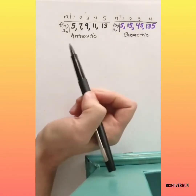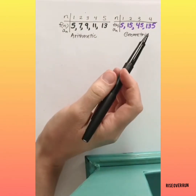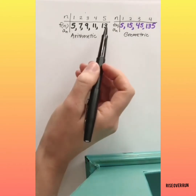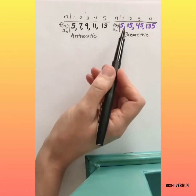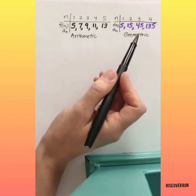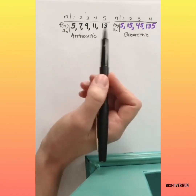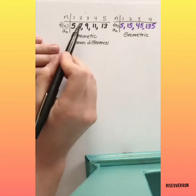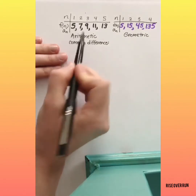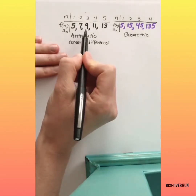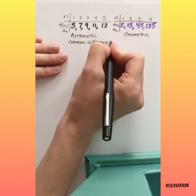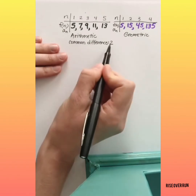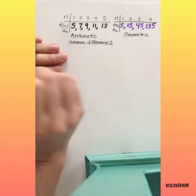It's important to know the difference between arithmetic and geometric sequences because that will help you write a formula. A lot of times in algebra, you'll be asked to find the 10th term or the 100th term. You could sit and write them out, but it's a lot quicker if you can make and use a formula. When you have an arithmetic sequence, the common difference is the number you're adding to get the next term. So this common difference is two. If it's increasing, this common difference should be positive; if it's decreasing, it'll be negative.